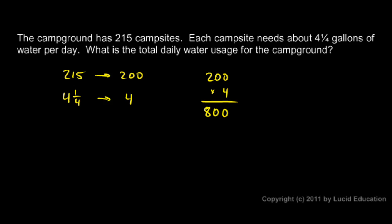And I want you to understand that in this case it makes sense to round and use estimated values. The exact number, if we multiply 215 by 4.25, wouldn't really be any more meaningful.